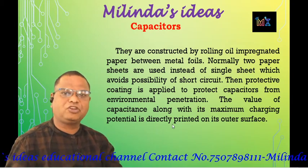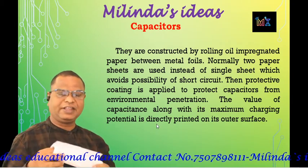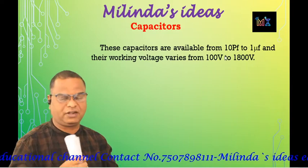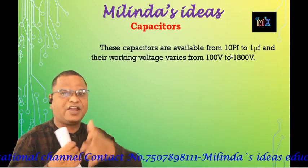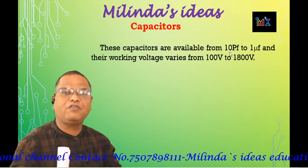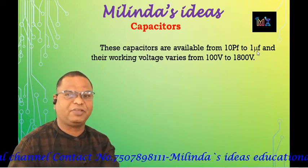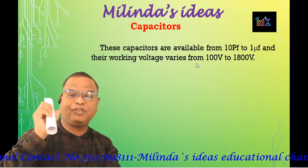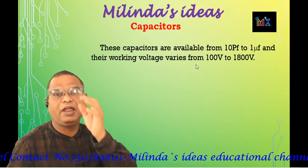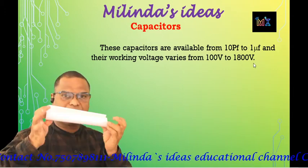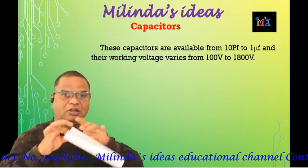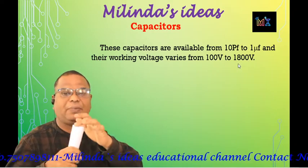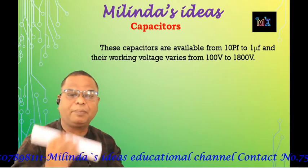Paper capacitors have a capacitance range of 10 pF to 1 µF. Their working voltage varies from 100 V to 1,800 V depending on the capacitor. So the range is 10 pF to 1 µF and a voltage of 100 V to 1,800 V can be applied between the two terminals.